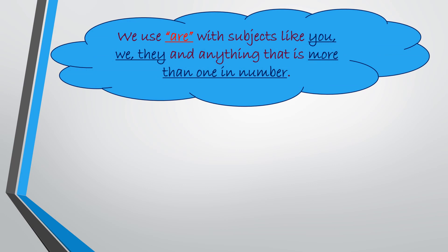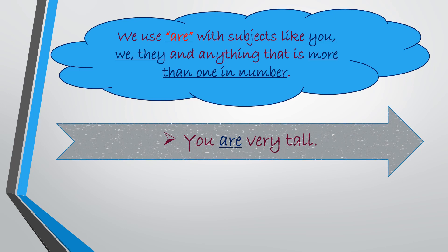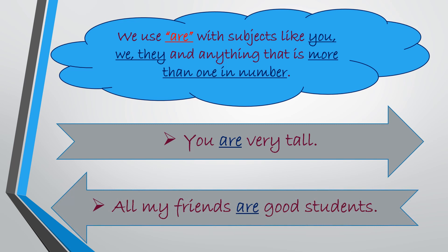We use 'are' with subjects like you, we, they, and anything that is more than one in number. For example: 'You are very tall' — 'you' is the subject, which is plural, so we use 'are.' Second: 'All my friends are good students' — the subject 'all my friends' indicates more than one in number, so we use 'are.'